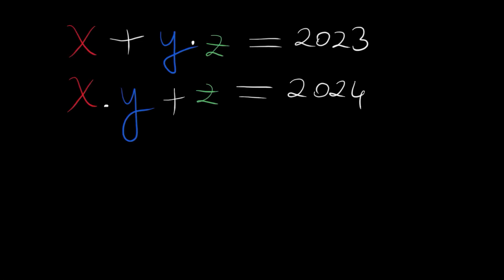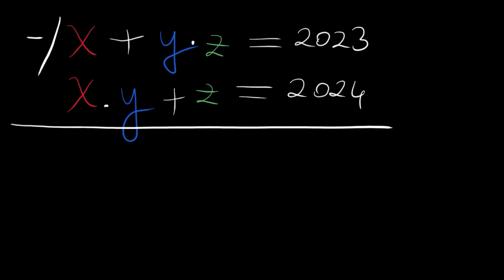Hello dear friends, welcome to our math positive channel. We have a system of equations here and we want to find positive integer solutions. It says x plus y times z equals 2023, and x times y plus z equals 2024. Let's begin by subtracting the first equation from the second.